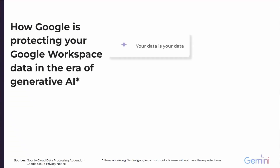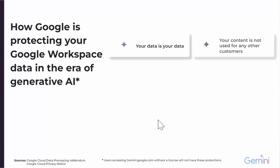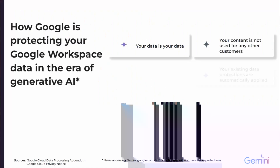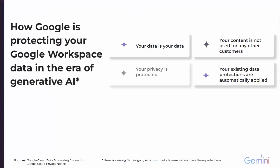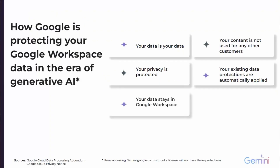To summarize: your data is your data — you own the data within your Google Workspace environment that you have generated. Your content is not used for any other customers, and I think that's a really important piece. Your existing data protection policies are automatically applied, which makes implementing Gemini much, much easier for customers who have put in place strong DLP and security controls. Your privacy is protected, something that a lot of customers are concerned about. And your data stays within Google Workspace.